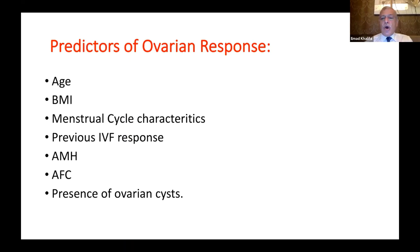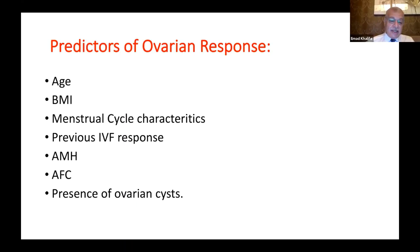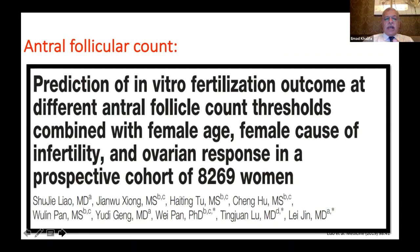Menstrual cycle characteristics are very important — a prolonged or short menstrual cycle, or a short follicular phase, can give you an idea about the ovarian response. Another important predictor is the previous IVF response. Two main parameters that should be used together are AMH (anti-Müllerian hormone) and AFC (antral follicle count). We will start with the antral follicle count as one of the main parameters for predicting ovarian response.